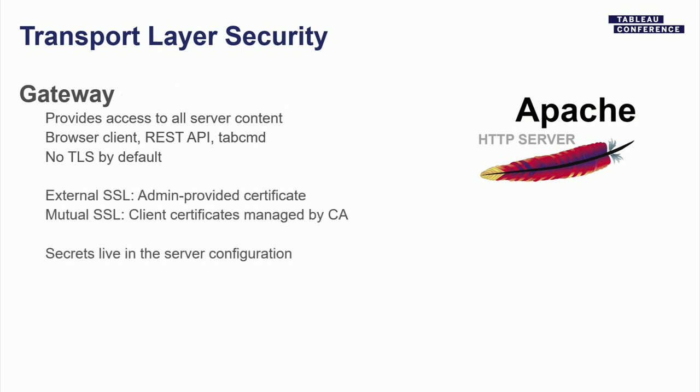The gateway is an off-the-shelf open-source component — the Apache HTTP server — and it does not come with TLS by default, so this is something you have to set up yourself. There are two sorts of SSL supported here. The first is called External SSL in our documentation. How this works: you as the administrator generate an SSL certificate and the private key corresponding to it, then give this to Tableau Server, which configures the gateway instances so that when an end user connects, they're presented with your certificate and can validate the identity of your Tableau Server.